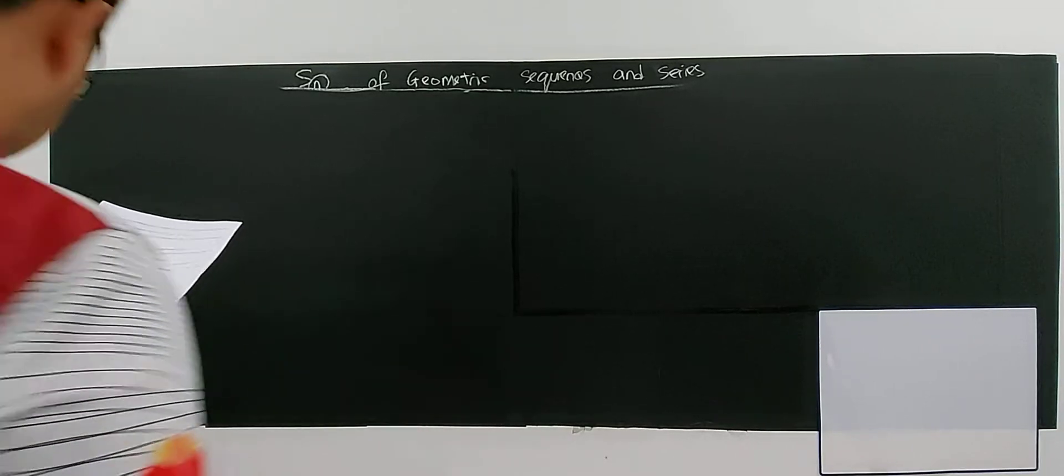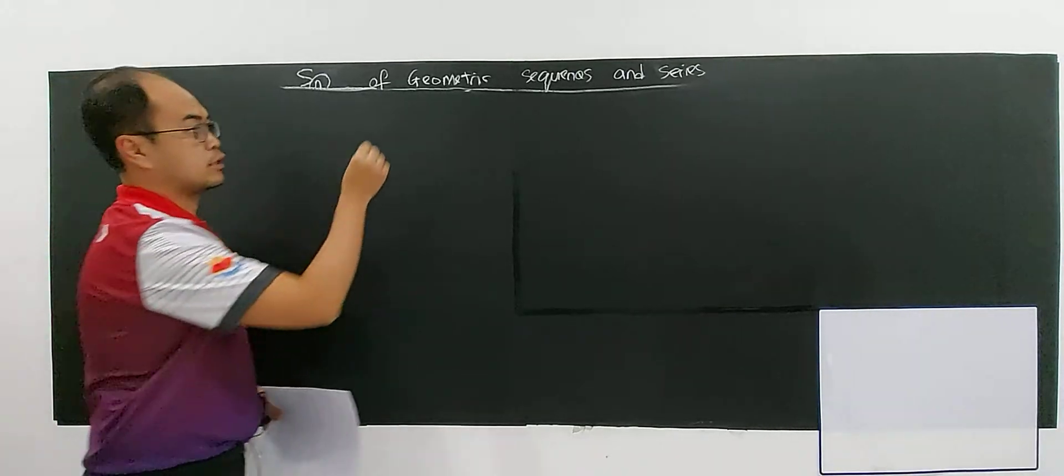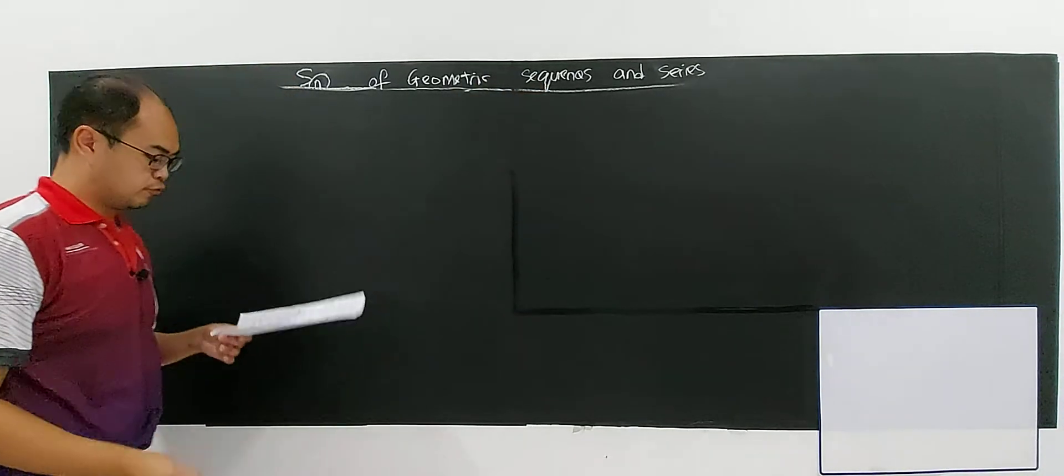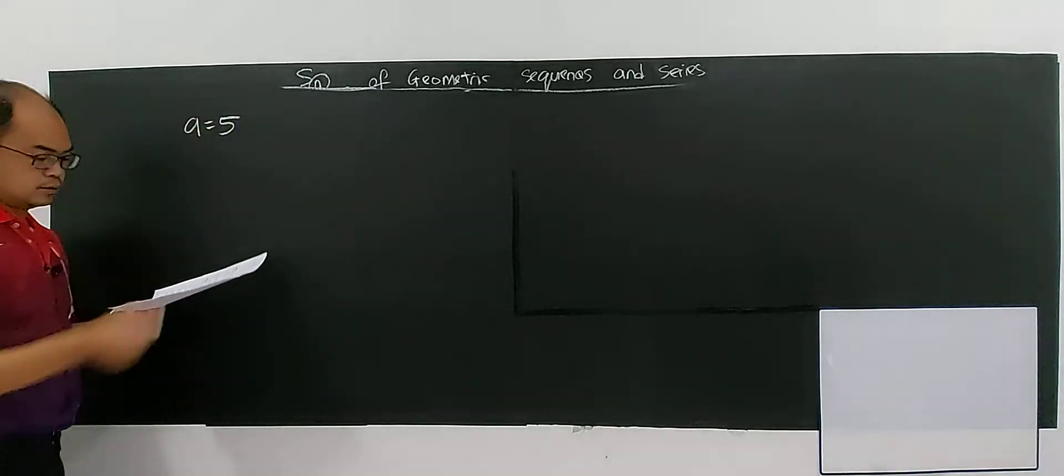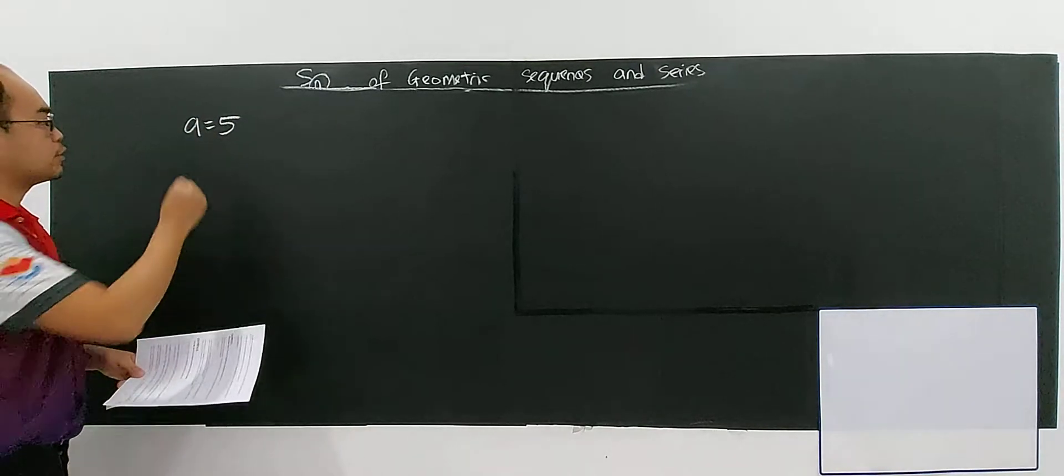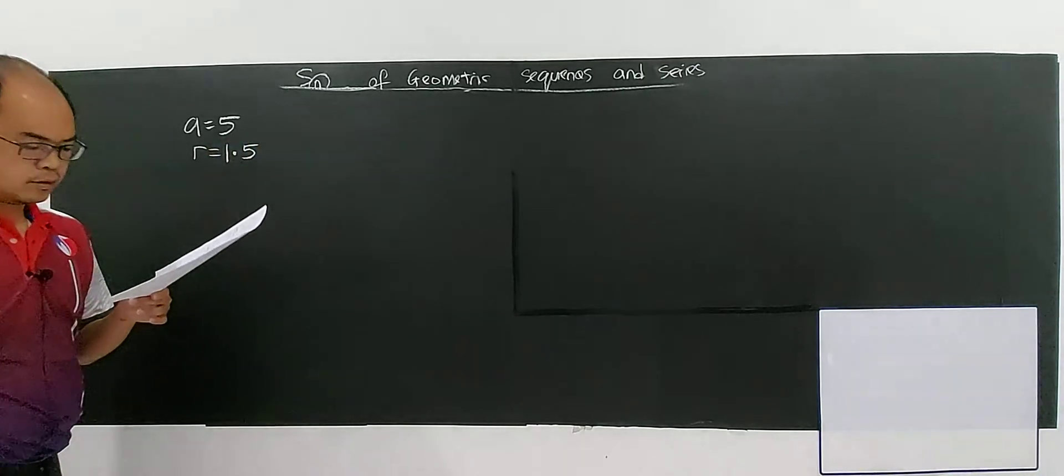All right, let's discuss this question. The first term of a geometric series, they have mentioned that geometric series. So the first term of a geometric series is 5, and the common ratio is 1.5.